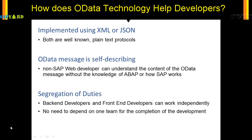What are the advantages of OData for developers? There are three main points. The first is that OData is implemented using XML or JSON. Second, OData messages are self-describing. And third, OData allows segregation of duties.